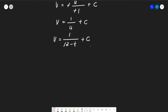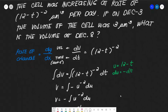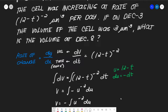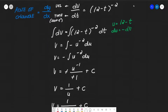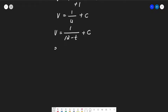Now we find the arbitrary constant C. The problem states that on December 3, the volume is 3 cubic micrometers. Since t is measured as days after December 1, December 3 corresponds to t = 3 - 1 = 2. So at t = 2, V = 3.